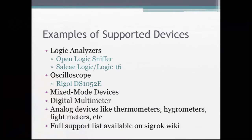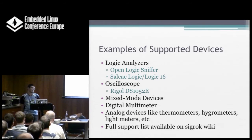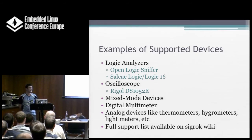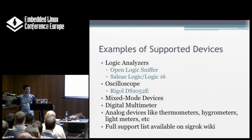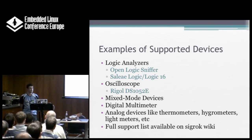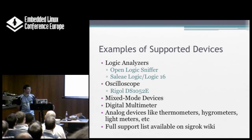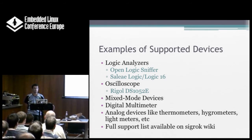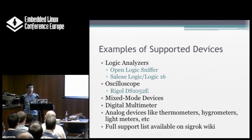This is not a complete list by any means — it's just some of the devices I've worked with. Logic analyzers: the OpenLogic Sniffer is one I've used a lot; the Salea Logic 16 is another one. For oscilloscopes, there's the Rigol DS1052E — it's a cheap one, about 50 megahertz, and it's a decent one. Other supported devices include mixed-mode devices, digital multimeters, analog devices like thermometers, hygrometer meters, and light meters. The full list is available on the SIGROC wiki.